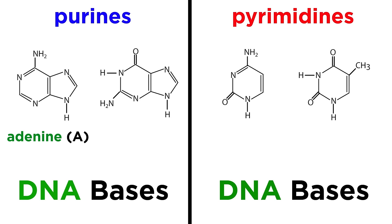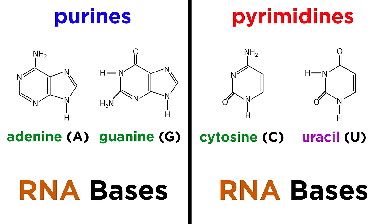These are abbreviated as A, G, C, and T. In RNA, instead of thymine there will be uracil, or U, which is almost the same as T — it's just missing this methyl group.